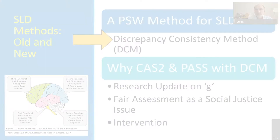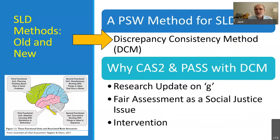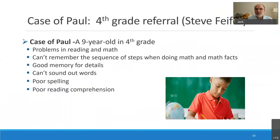I'm going to talk to you about the Pattern of Strengths and Weaknesses method that I developed. I first talked about this in 1997, and then in my first essentials book called The Discrepancy Consistency Method. I'm going to show you what this is about by showing you a case.